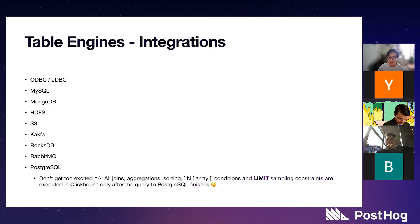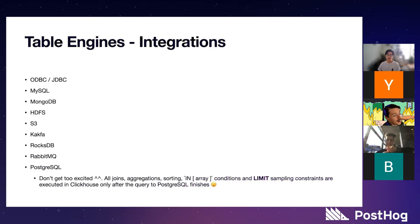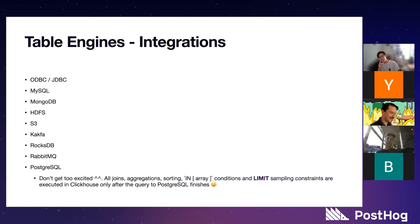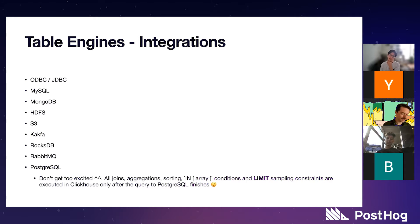The PostgreSQL table engine — this was something Eric and I were looking at recently because it's relatively new. We thought: PostgreSQL table engine, we could wrap persons and person distinct IDs and pull data in from Postgres, which is the source of truth for that. Don't get too excited though. All joins, aggregations, sorting, array conditions, and LIMIT constraints are executed in ClickHouse only after the query to PostgreSQL finishes. So any time you use this, it grabs all the data first and hangs the engine until all that data gets into ClickHouse, and then ClickHouse does its magic.